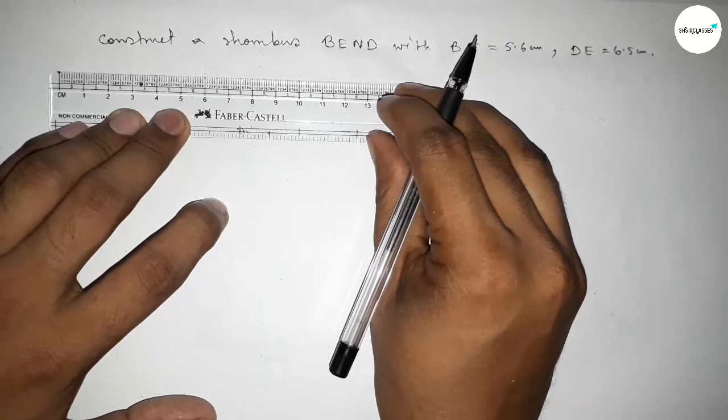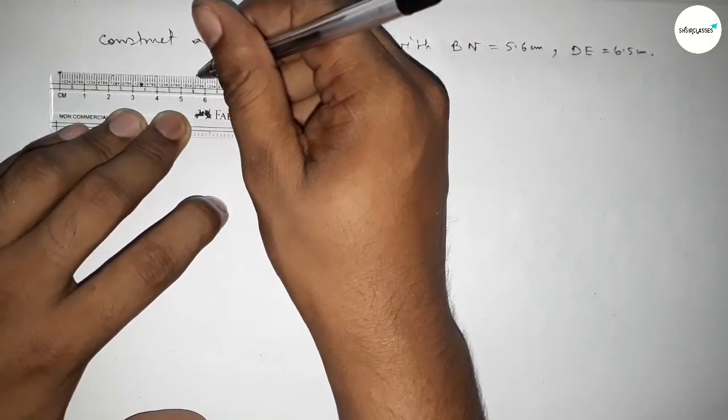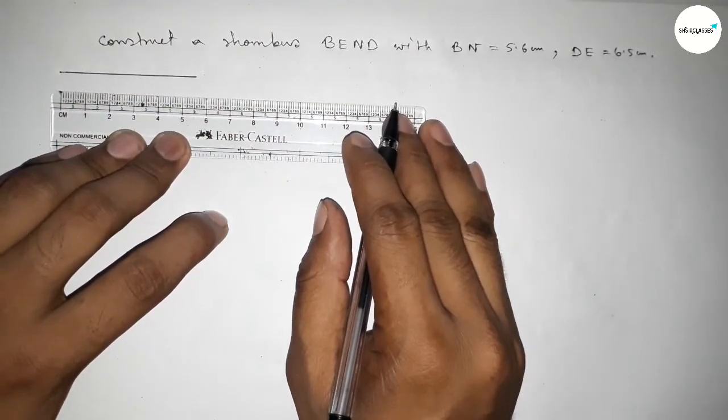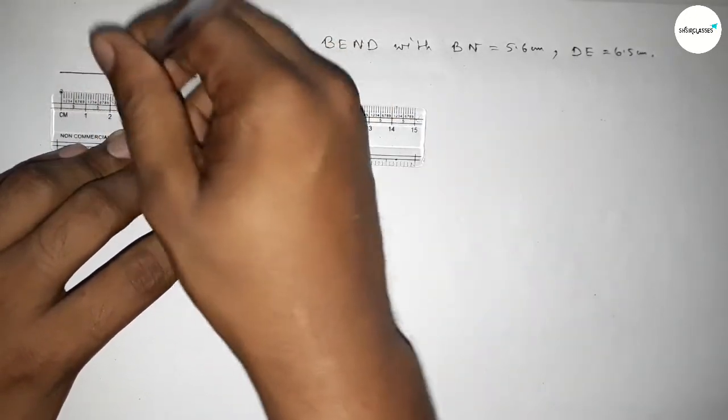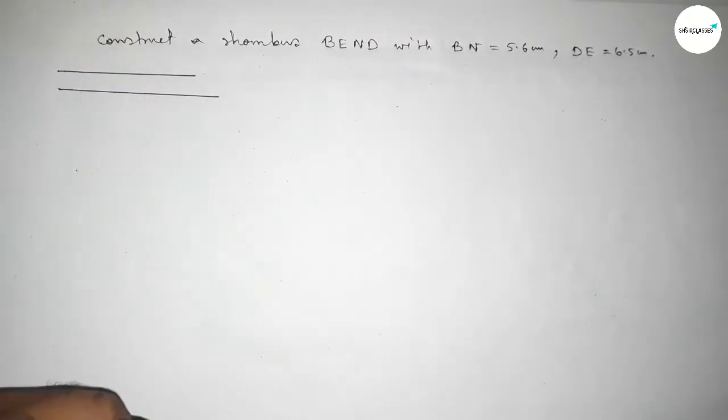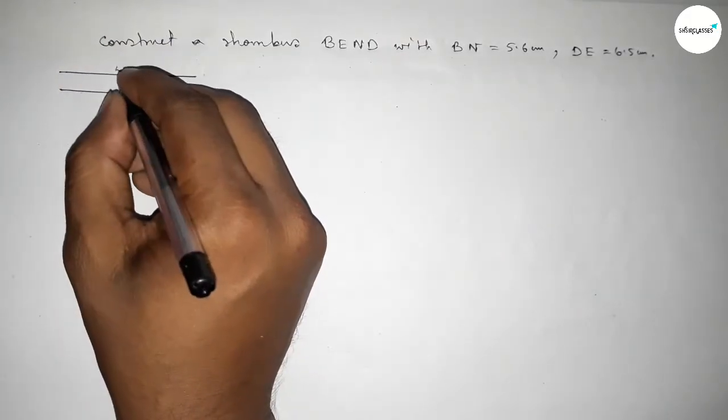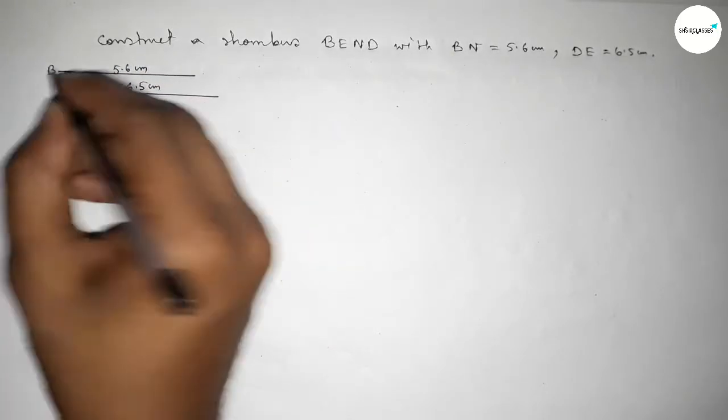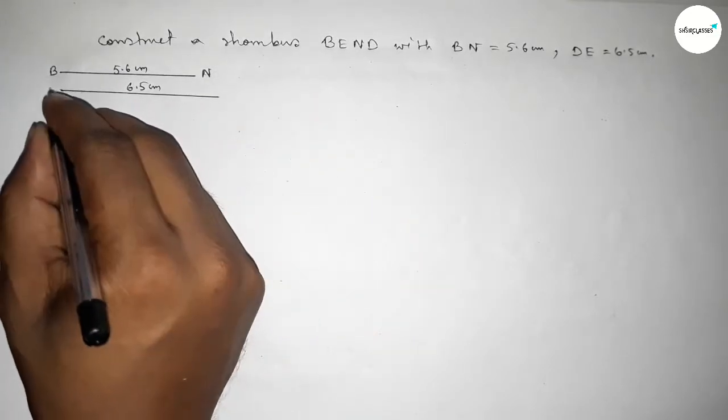First of all, drawing the two diagonals. First one is 5.6 centimeters, then the second diagonal is 6.5 centimeters. This is BN, and this one is DE.